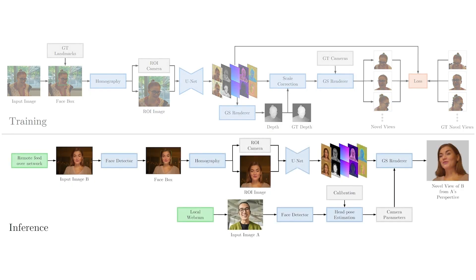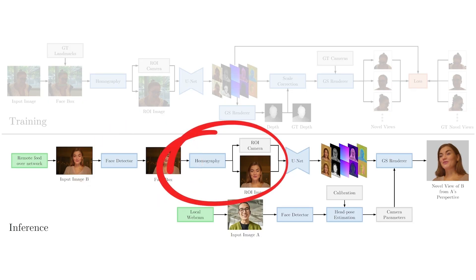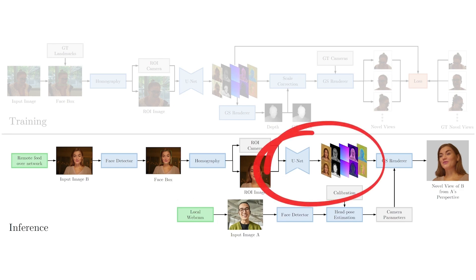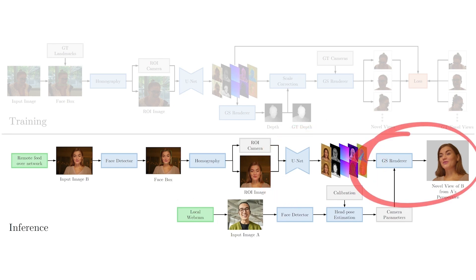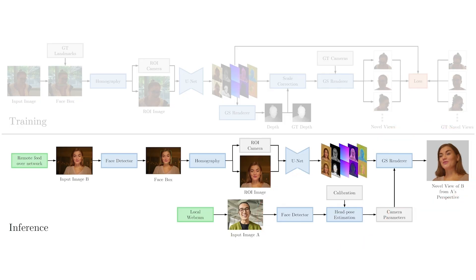At inference time, we extract a region of interest using a face detector and apply a homography to resample as if from a camera with symmetric frustum. Running our trained U-Net on the ROI gives us 3D Gaussians that can be rendered to a novel view. In the case of our video calling prototype, we use a face tracker to determine the rendered viewpoint.